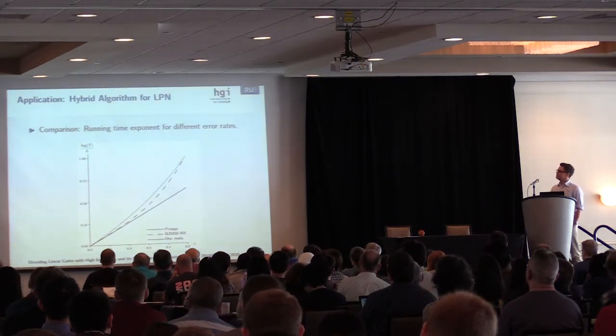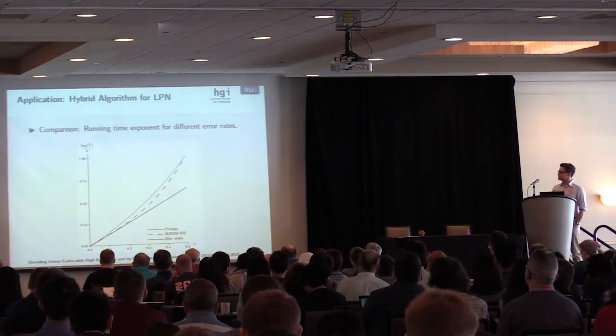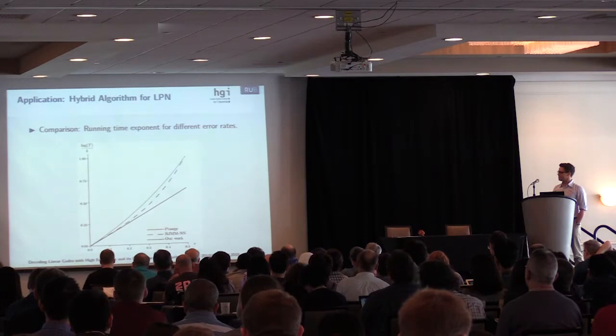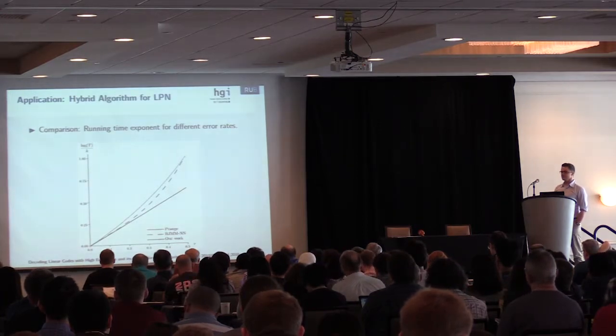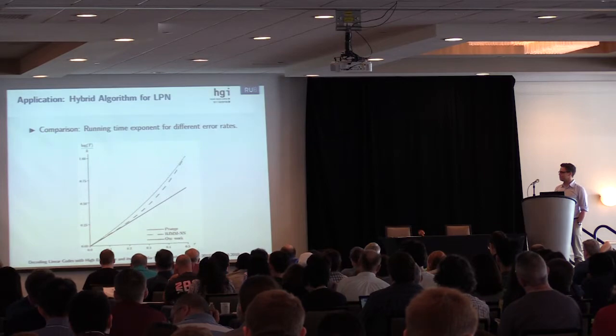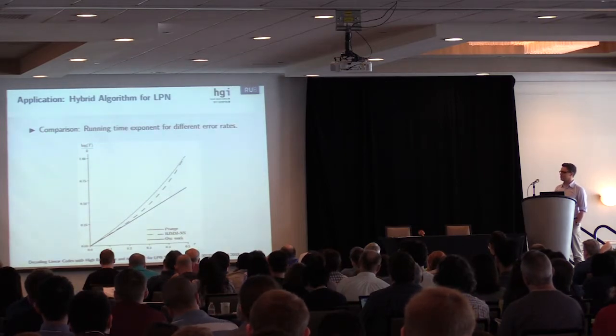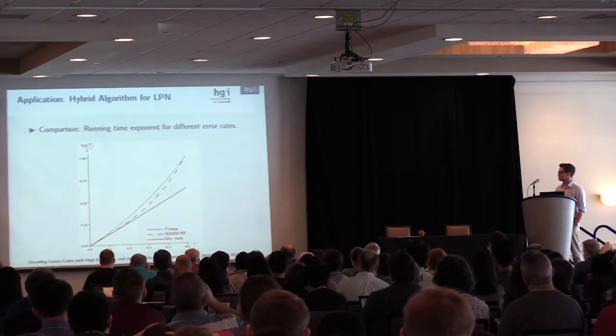Another graph shows the running time exponent over the error tau. Here you can see again that our algorithm behaves best for large errors and for small errors we only get a minor improvement.